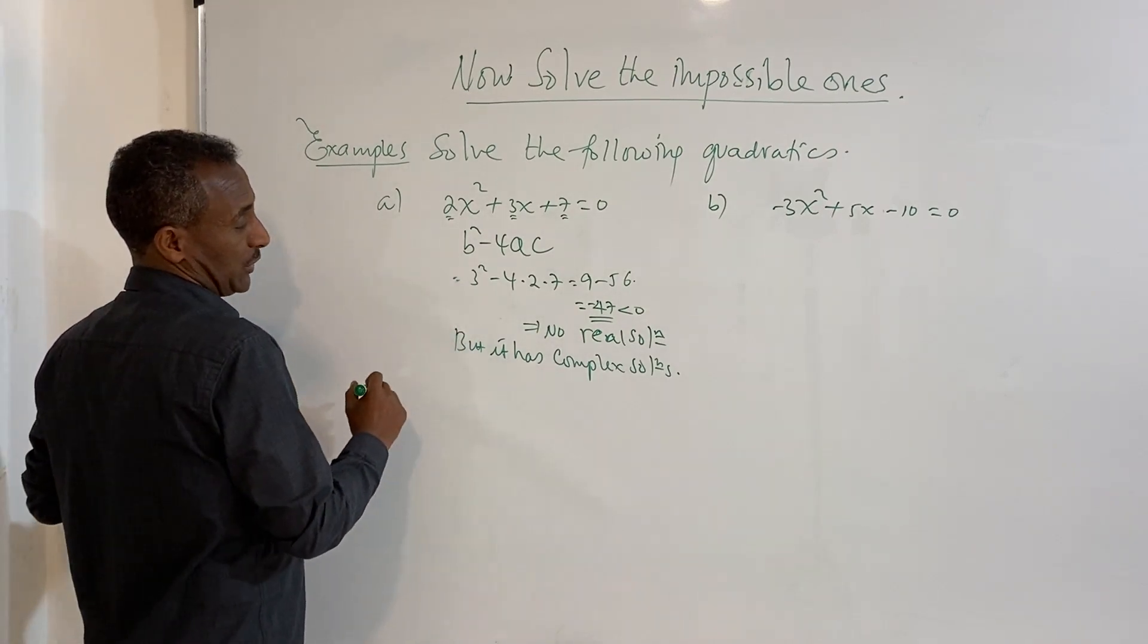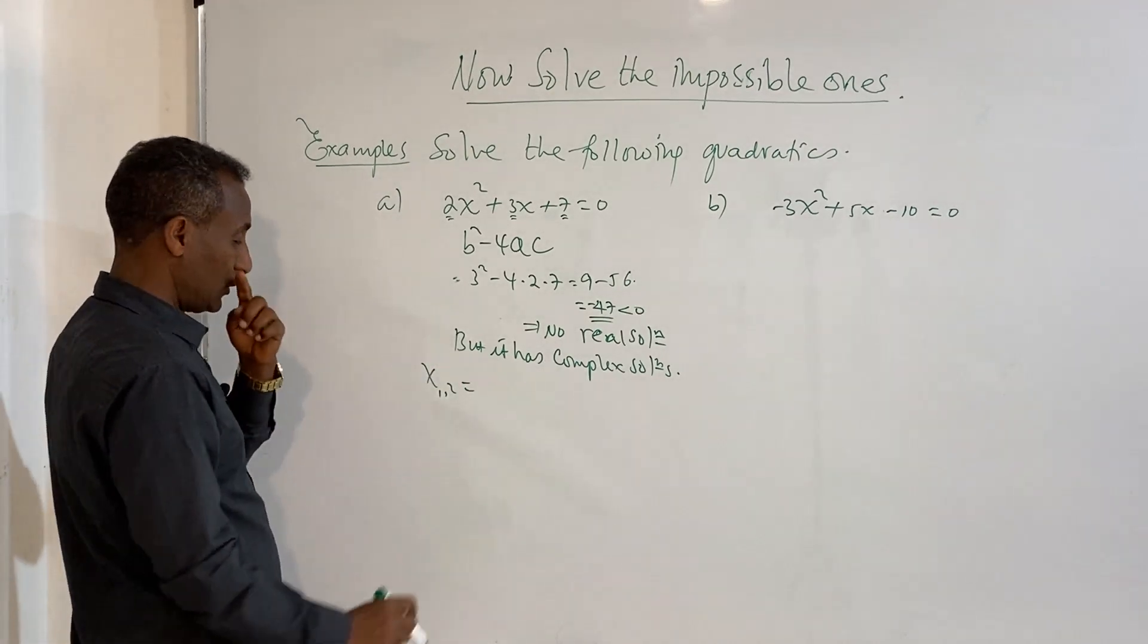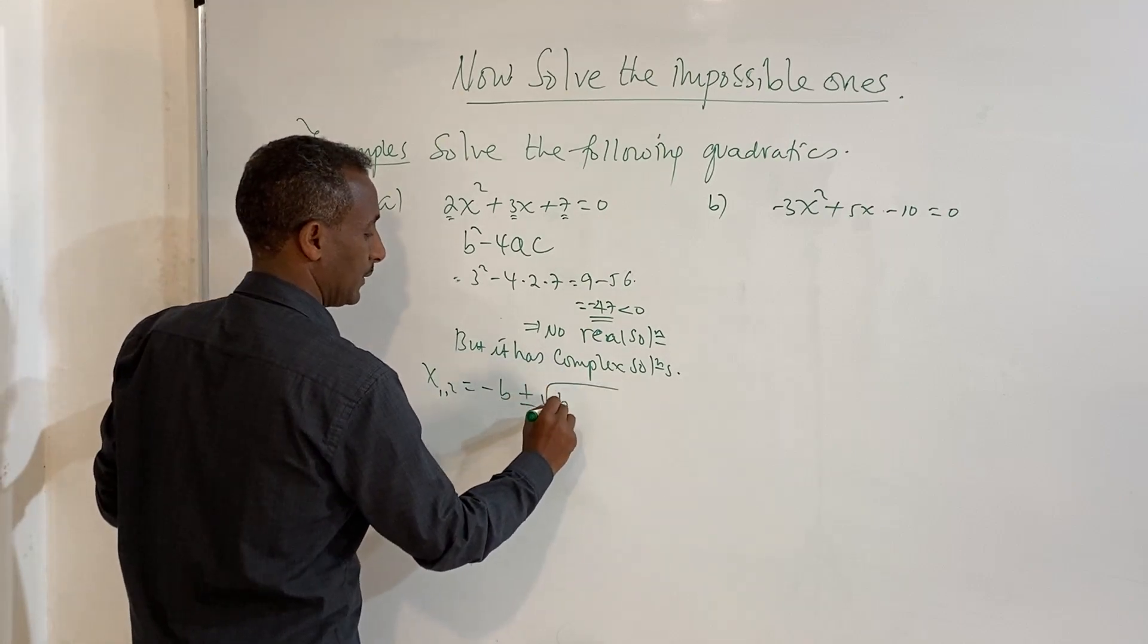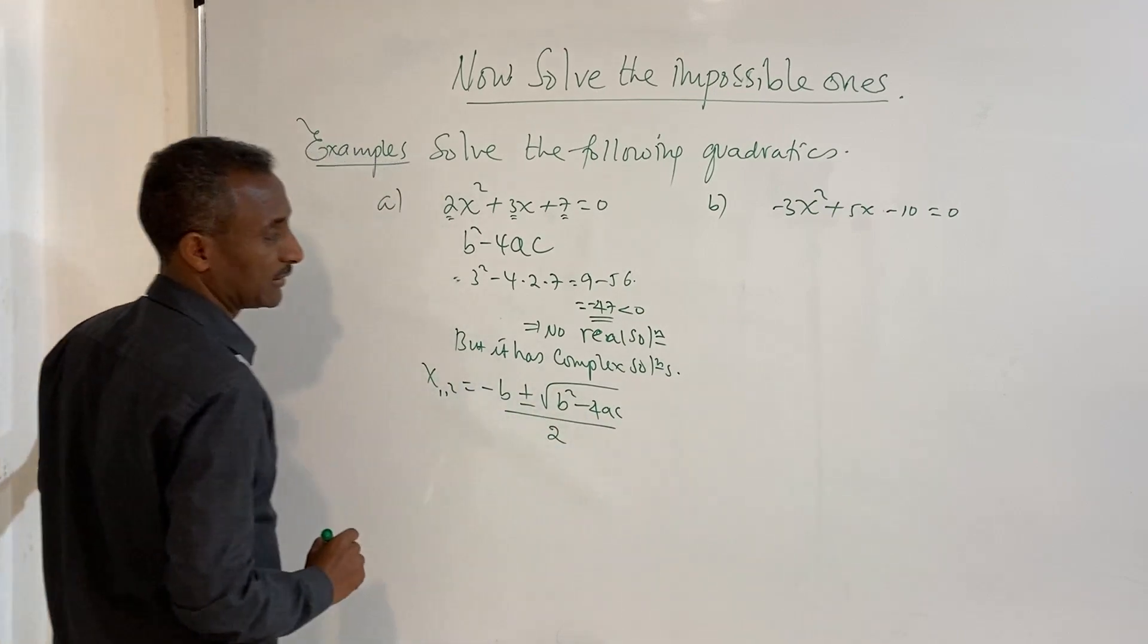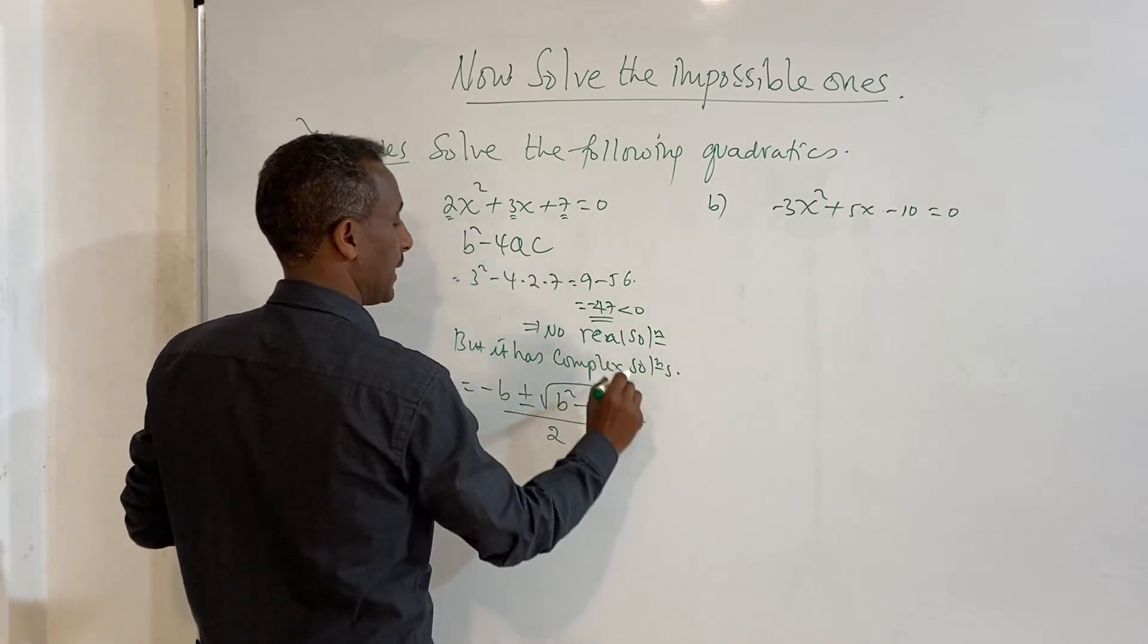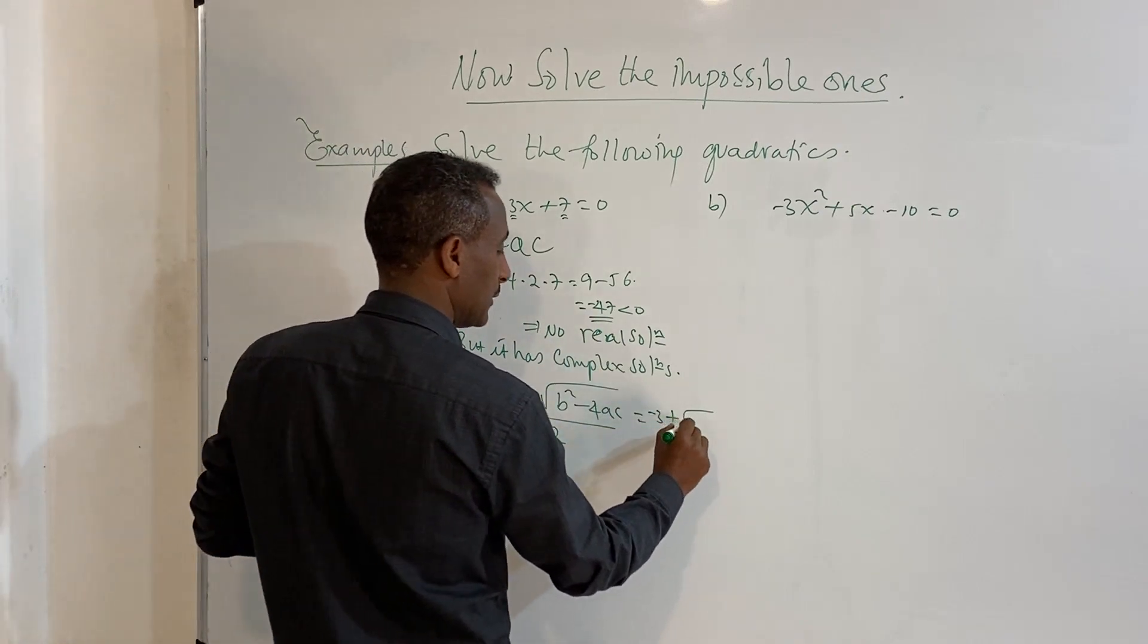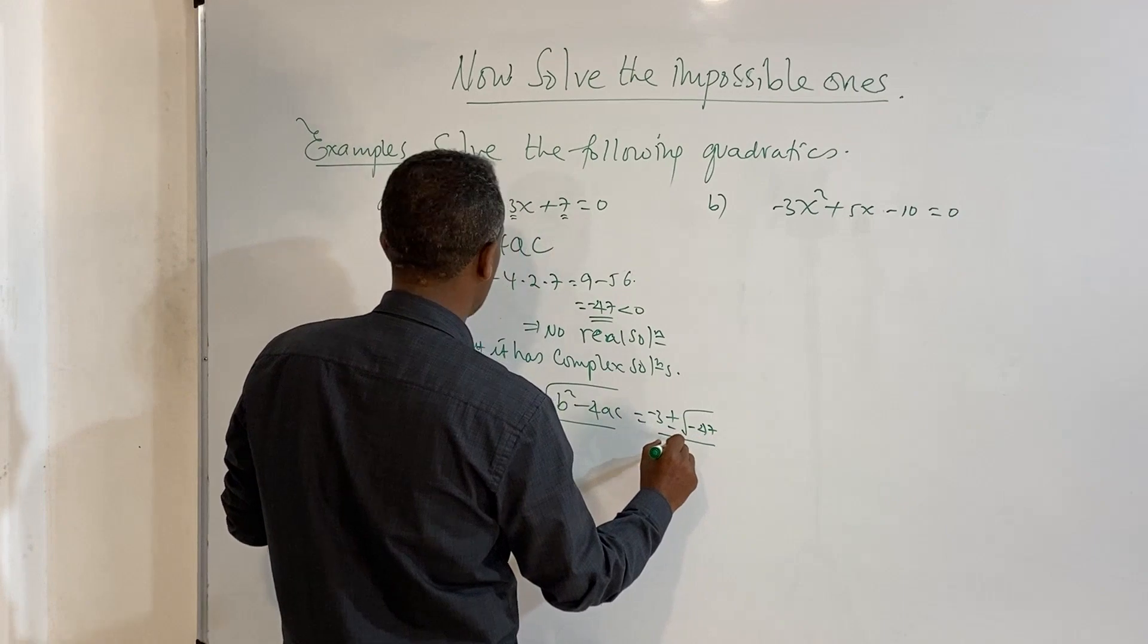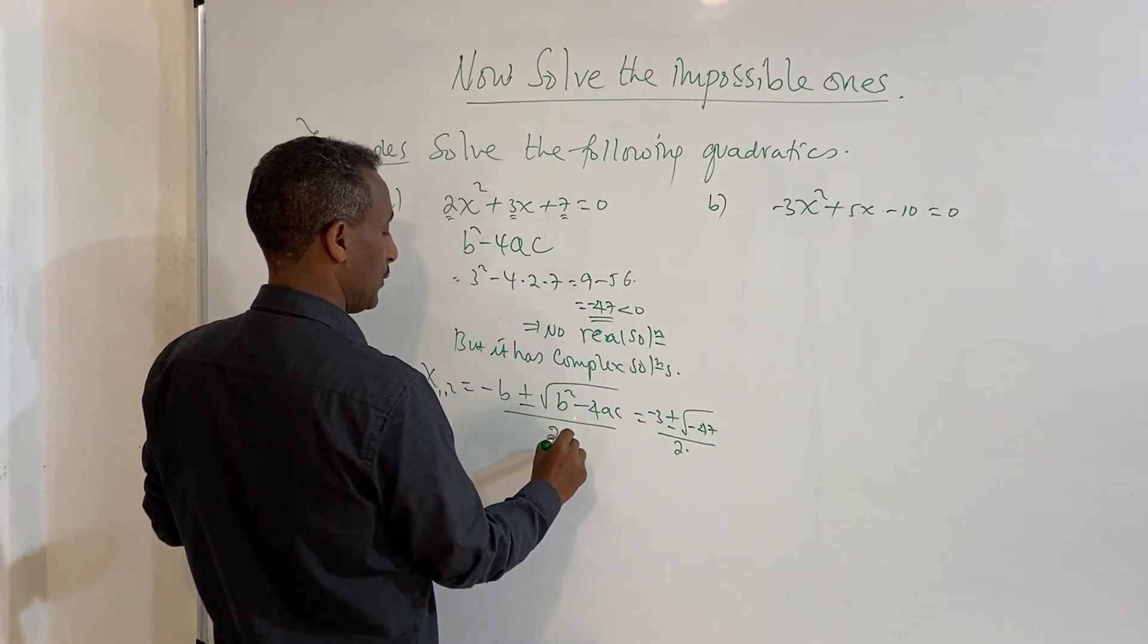And then, we have solution x1 and x2. We use the quadratic formula, which is minus b plus or minus square root of b squared minus 4ac over 2a.